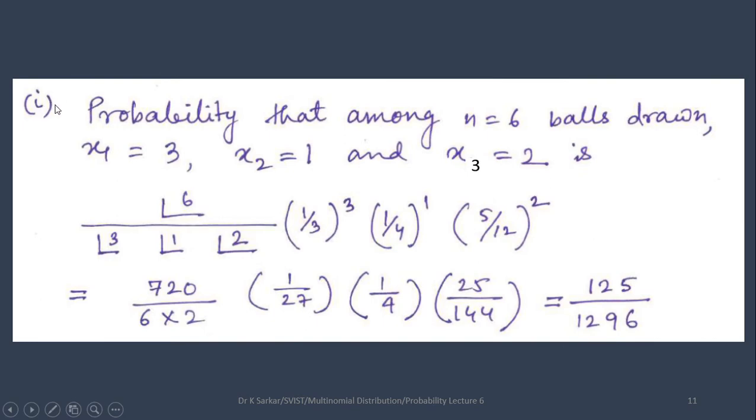Number 1, probability that among n equals 6 balls drawn, x1 is 3, x2 is 1 and x3 is 2.